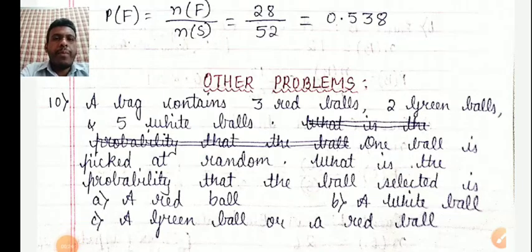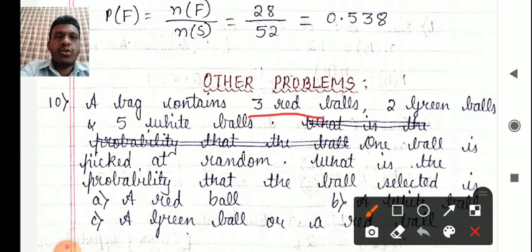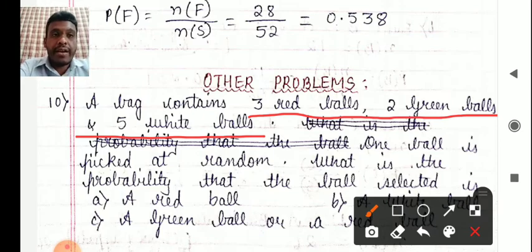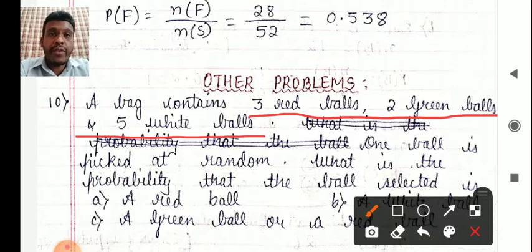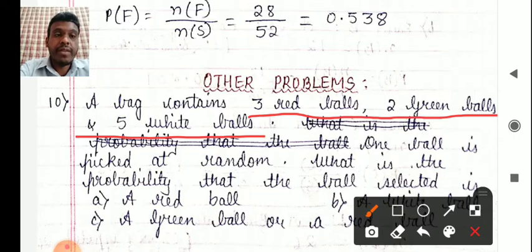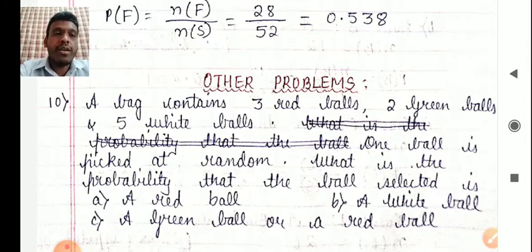So let problem number 10 go like this. A bag contains 3 red balls, 2 green balls and 5 white balls, so there are a total of 10 balls in the bag. One ball is picked or selected at random. What is the probability that the ball selected is: (A) a red ball, (B) a white ball, and (C) a green ball or a red ball?